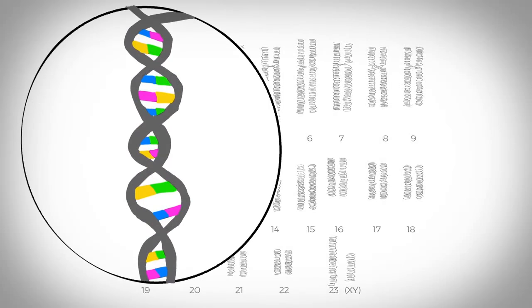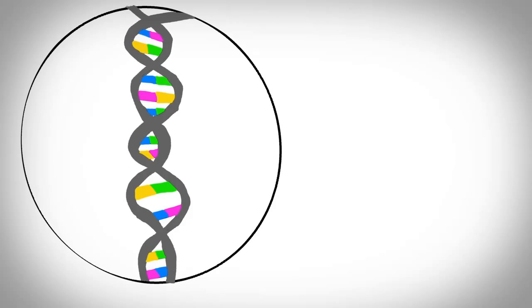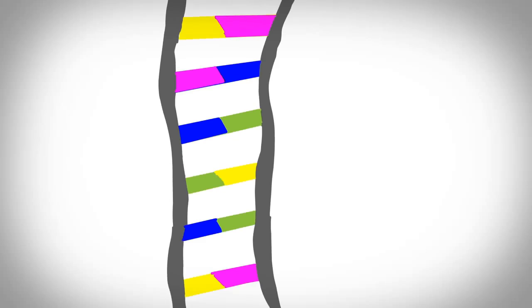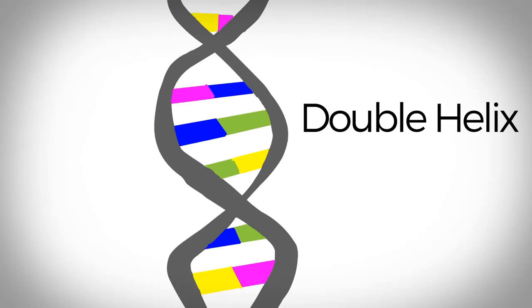The chromosomes are really long strings of DNA, deoxyribonucleic acid. DNA is shaped like a ladder that's been twisted. This shape is called a double helix.